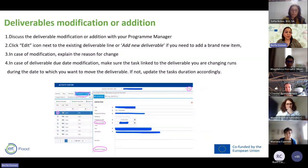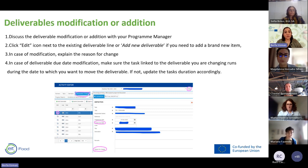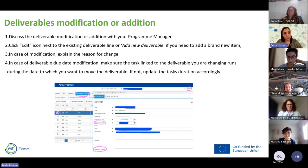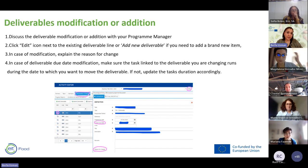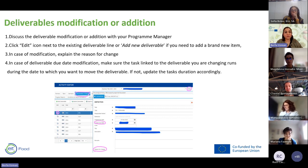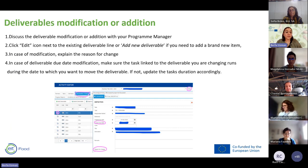Deliverables can also be modified or new ones added. First, discuss the modification or addition with your program manager. If agreed, go to Plaza and click the edit icon next to the existing deliverable, or go to the Deliverables/Output tab and add a new deliverable. If a modification is needed, explain the reason for the change. For deliverable due date modifications, ensure the tasks linked to the deliverable run during the new date — otherwise the system will give errors. If the task dates are wrong, update the task duration accordingly.